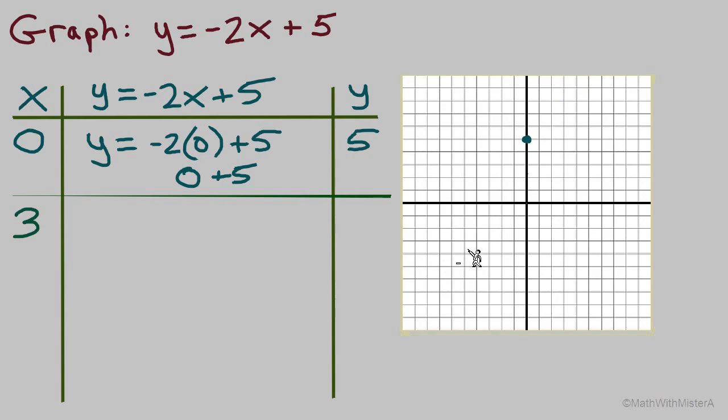It doesn't matter exactly which three ordered pairs we choose, because they should all line up on the very same straight line. Next, x equals 3, so the equation y equals negative 2 times 3 plus 5. Simplifying the multiplication, negative 2 times 3 is negative 6 plus 5 equals negative 1.